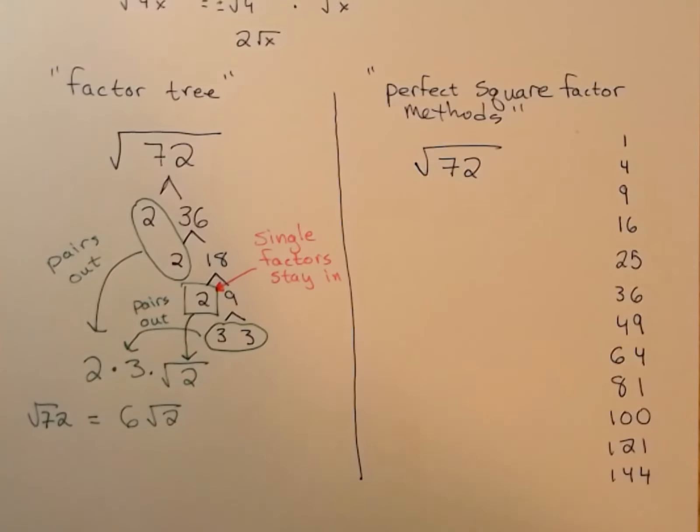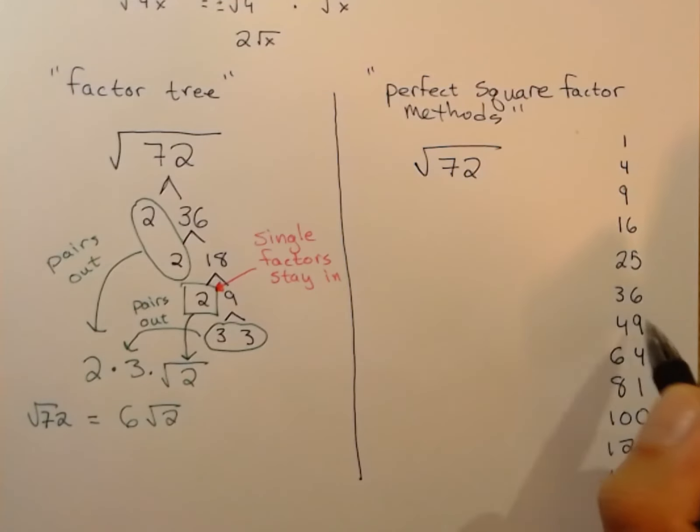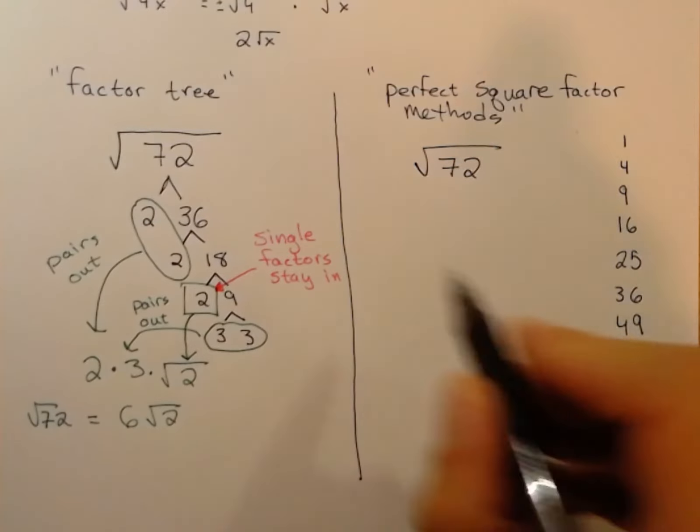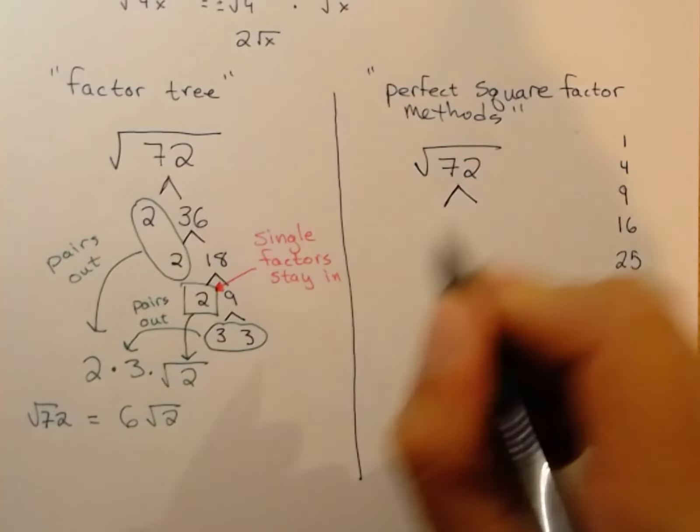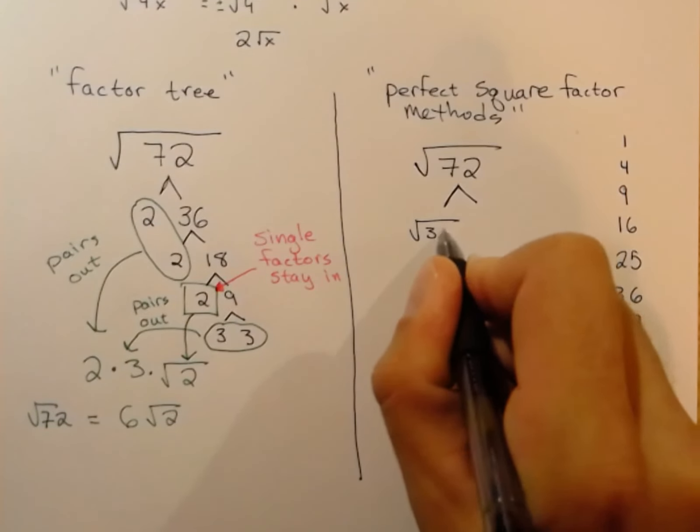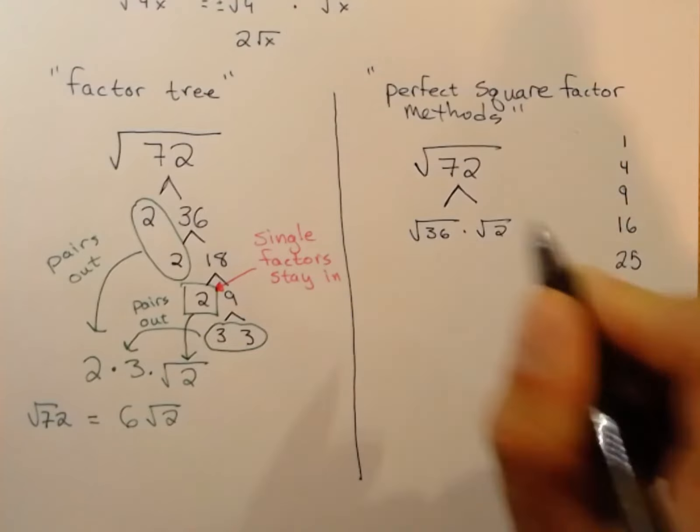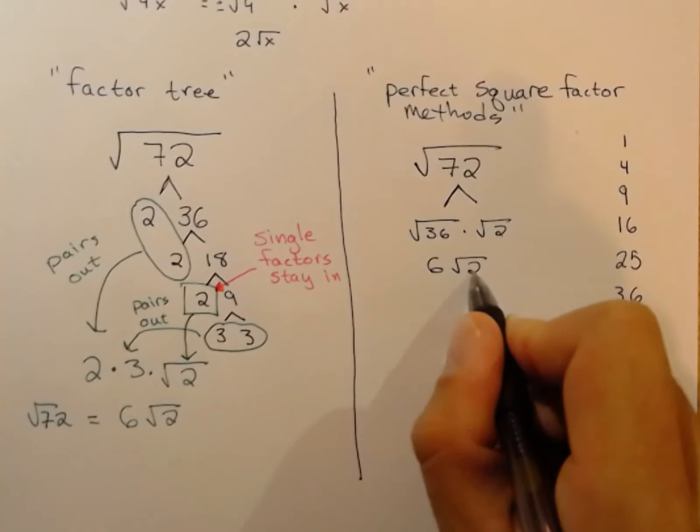For example, if you recognize 72 is really 36 times 2, you can break this into √36 times √2. The square root of 36 is just 6.